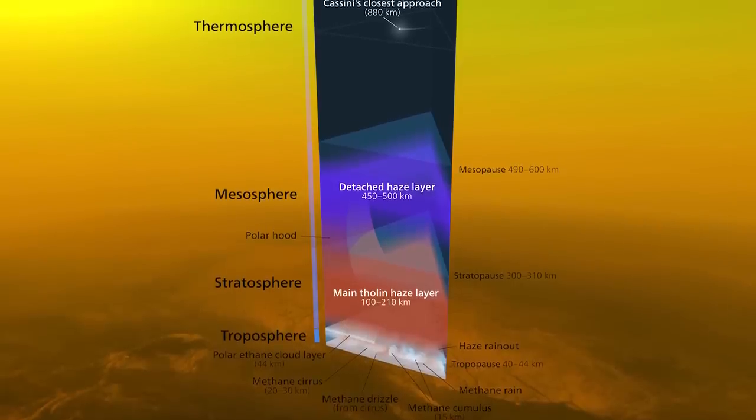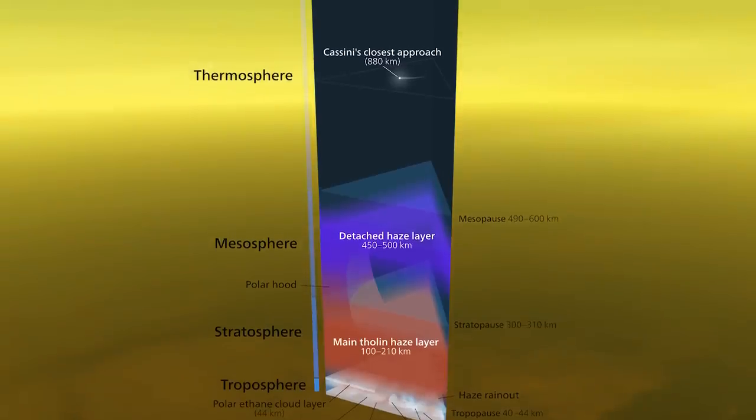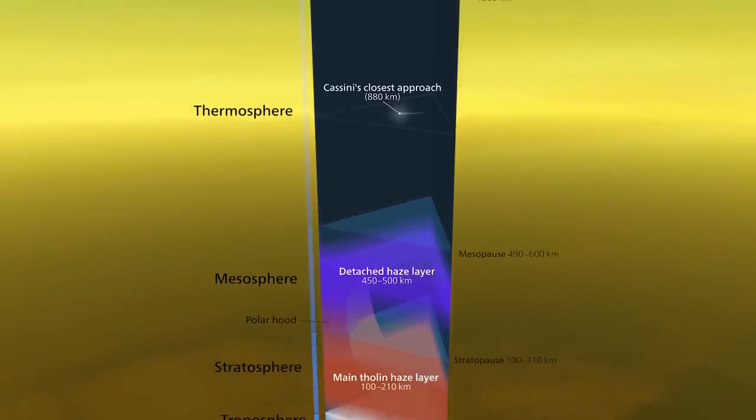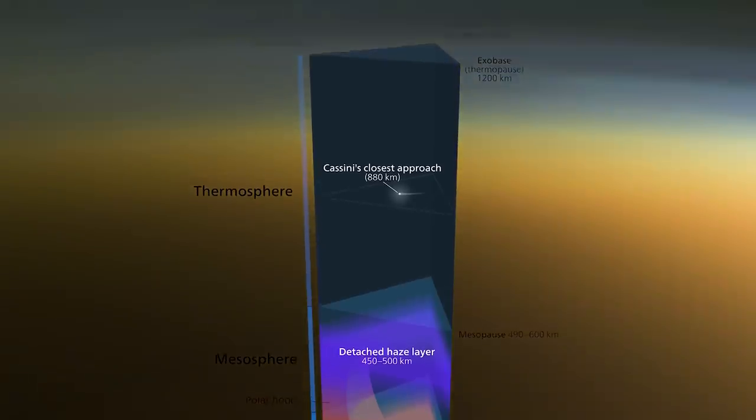The mesosphere extends 600 kilometers above the surface. That's about 2 times higher than the International Space Station orbits Earth and about 480 kilometers higher than Earth's mesosphere.